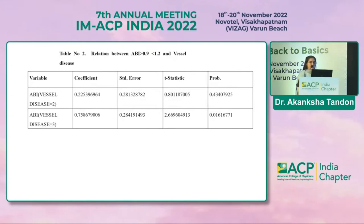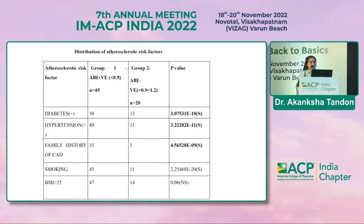In cases with ABI values between 0.9 and 1.2, significant values were also seen with patients having triple vessel disease. Various atherosclerotic risk factors were studied and compared between the two groups. Statistical significance was found between patients having a history of diabetes, hypertension, family history of CAD, and smoking, but no statistically significant findings were seen with BMI.